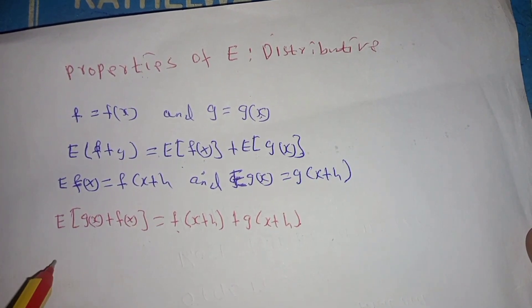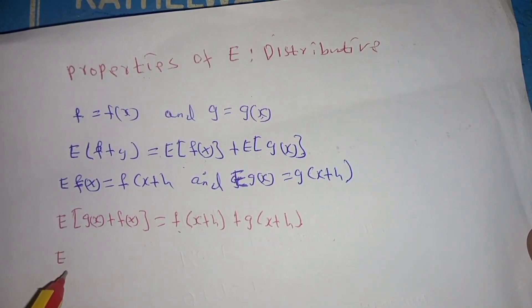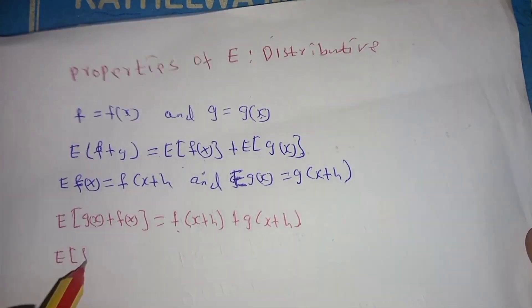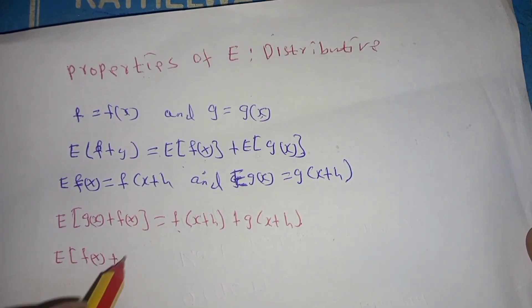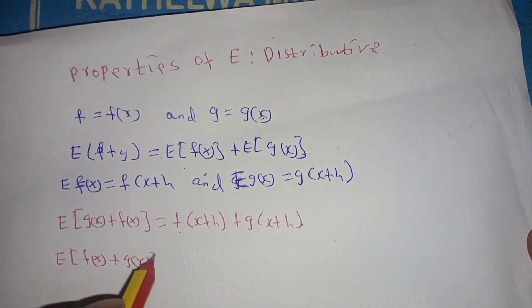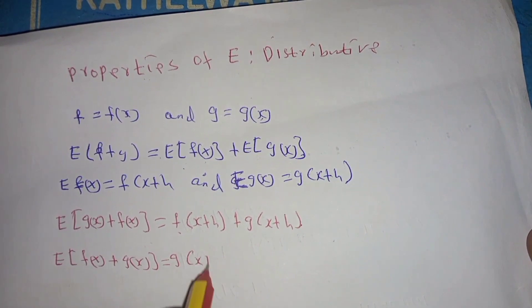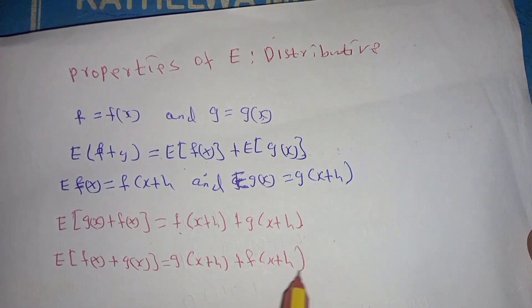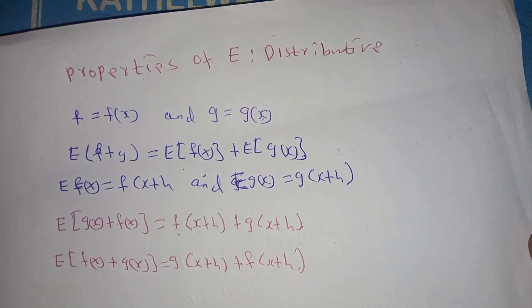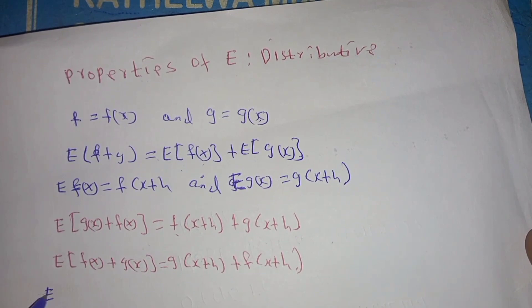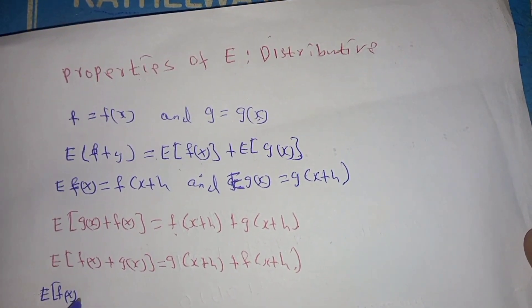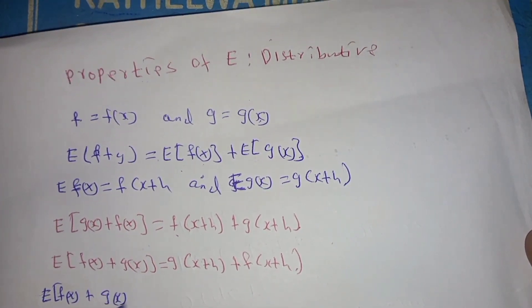Meaning that E of (f of x plus g of x) is equal to g of x plus h plus f of x plus h. So we can say that E of (f of x plus g of x) equals